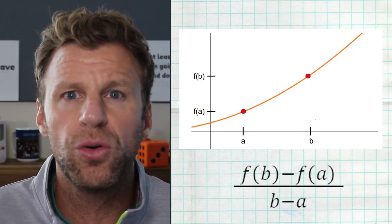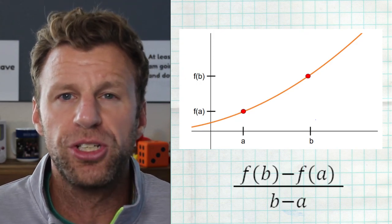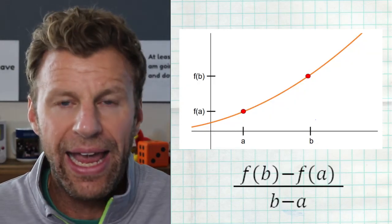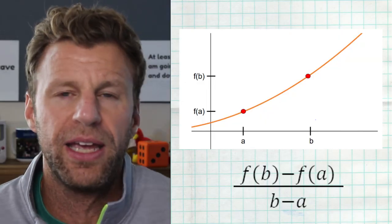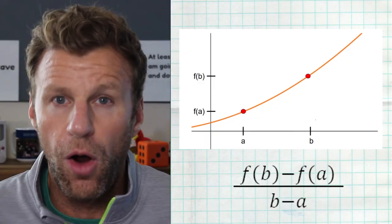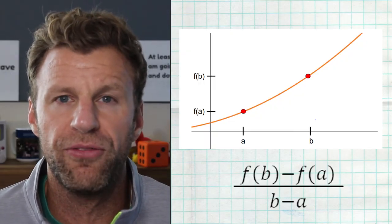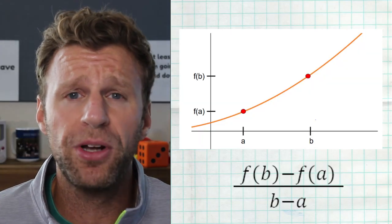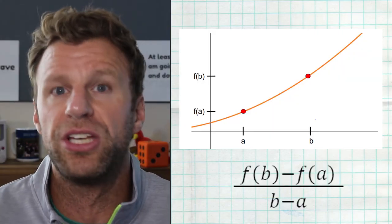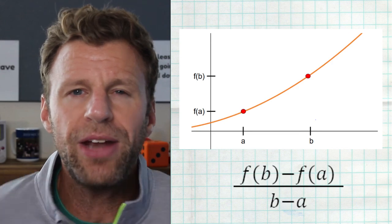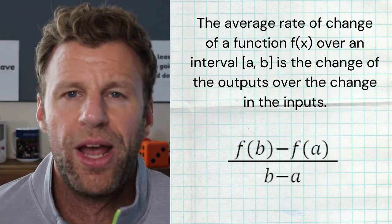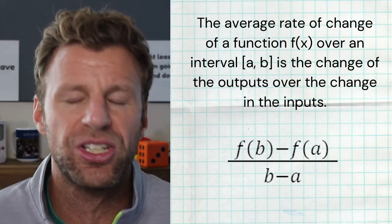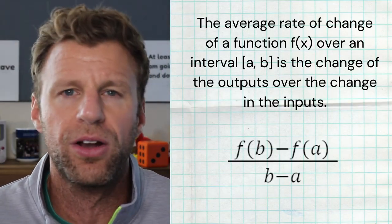We can look at a graph to fully understand what we're looking at. We have a function and we take an interval from A to B. A has an output F of A, and B has an output F of B. So the average rate of change over this interval from A to B is the ratio of the outputs divided by the inputs: F of B minus F of A, divided by B minus A.